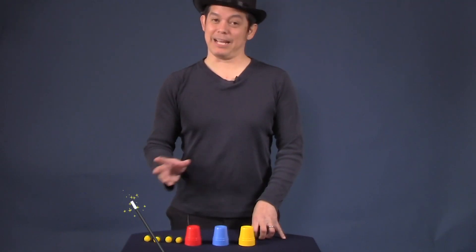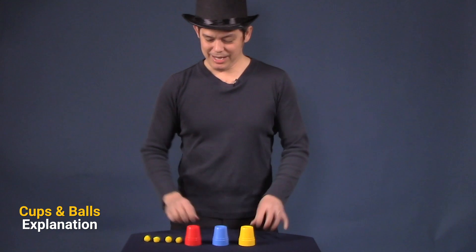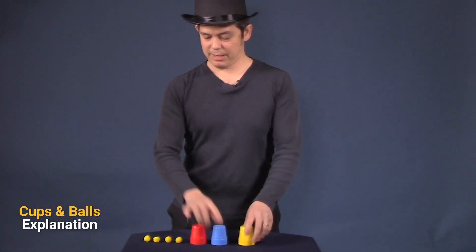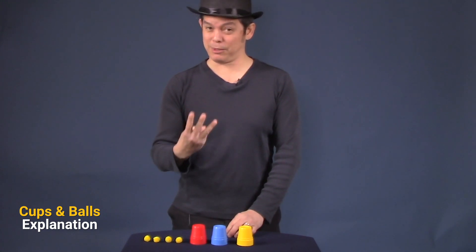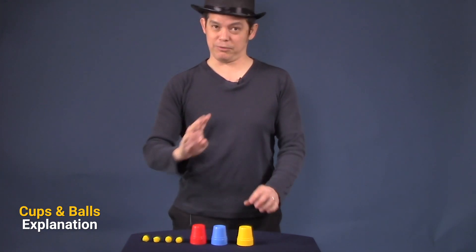This is the Cups and Balls trick explanation. It basically uses three cups and four balls. Now, the audience only is supposed to think that there's only three balls, but you're going to use four for the trick.